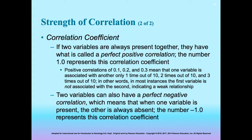If two variables are always related — that is, they are always present together — they have what's called a perfect positive correlation. The number 1.0 represents this correlation coefficient. Nature has some 1.0s, such as the lack of water and the death of trees. 1.0s also apply to the human physical state, such as the absence of nutrition and the absence of life.